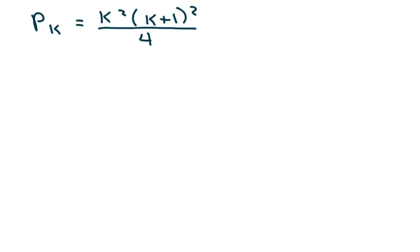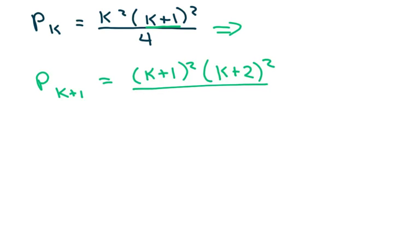And the next one, this one's just going to be p sub k plus 1. Everywhere there's a k, just put k plus 1. And this k, we know inside here, this is just going to be k plus 2, because that's the next term, all over 4.